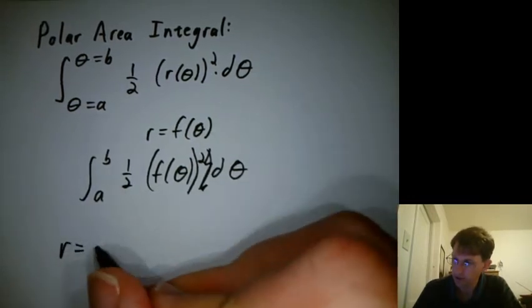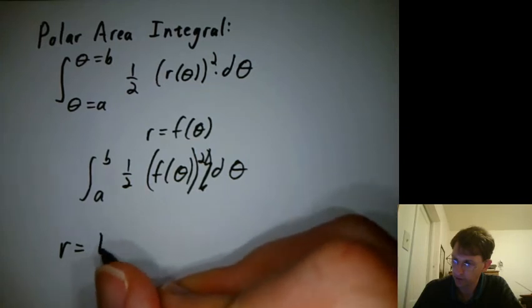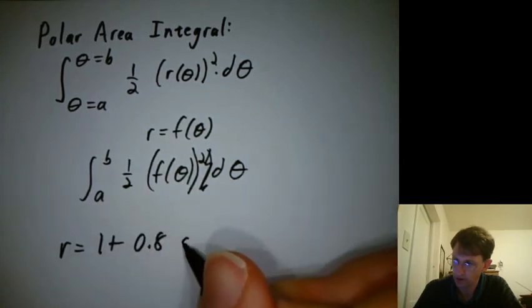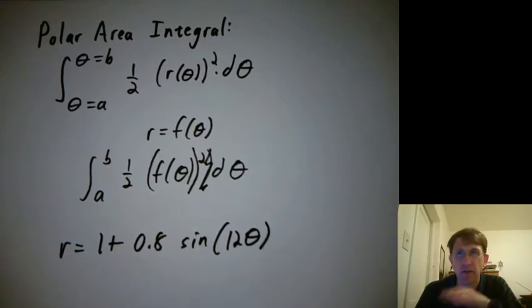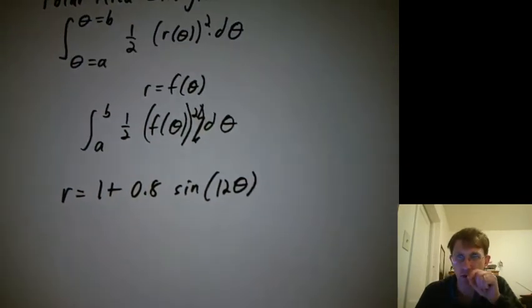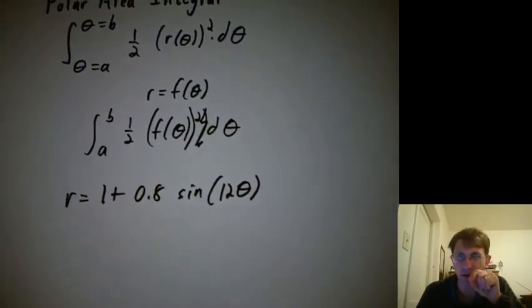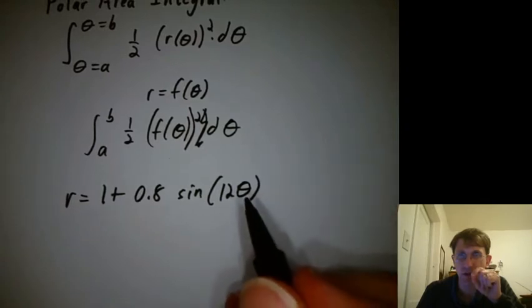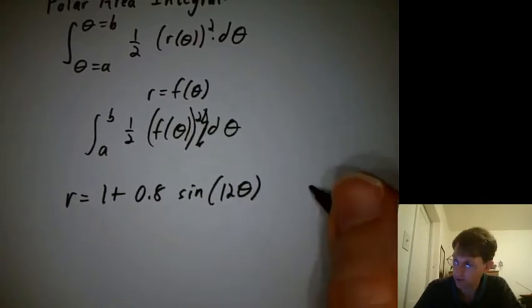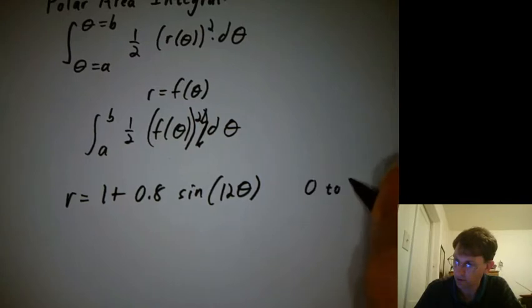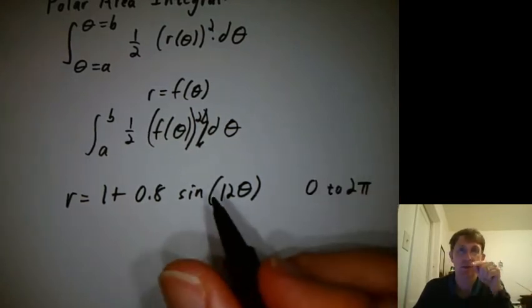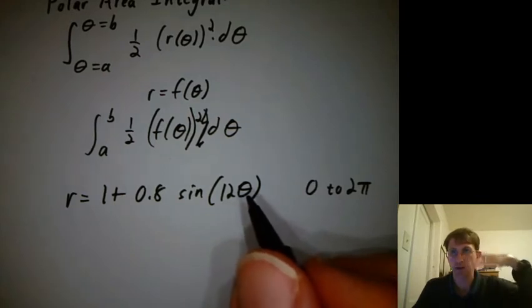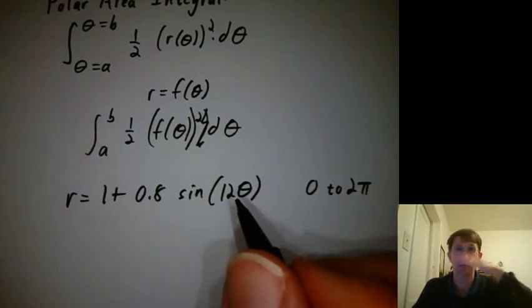Let's use r equals 1 plus 0.8 sine of 12 theta. Think about what that might do before we graph it. So as theta goes from 0 to 2 pi, we're just going to do a full circle, but what's going to happen with this? It's going to be oscillating fairly quickly, 12 times during the whole circle.